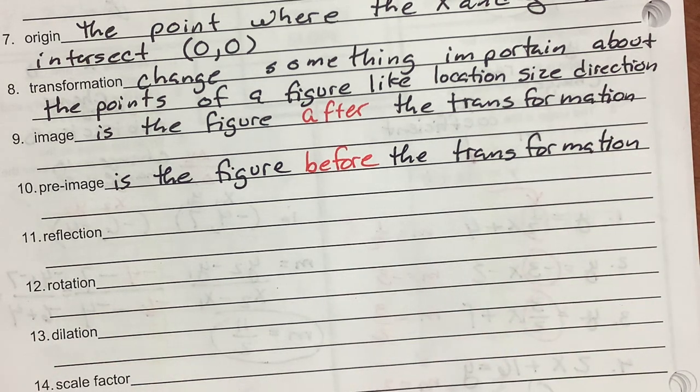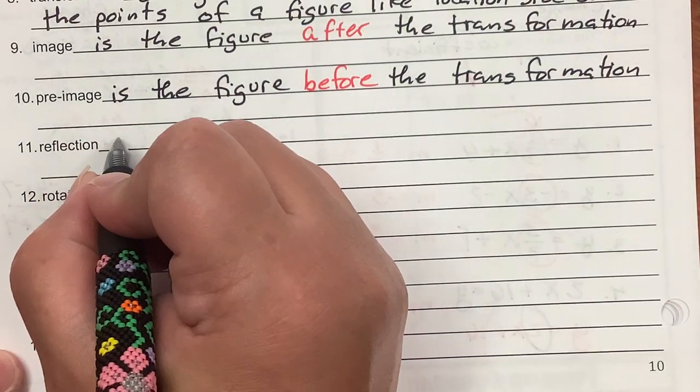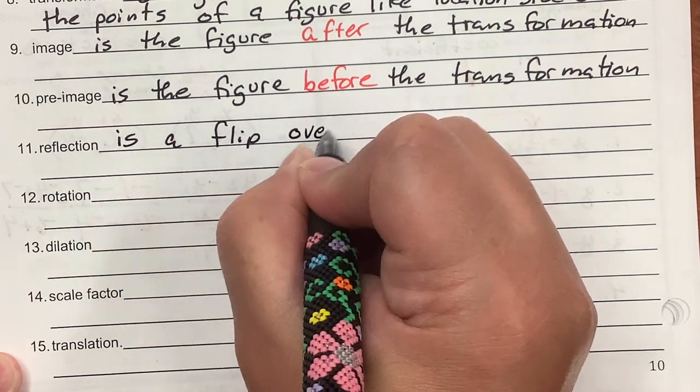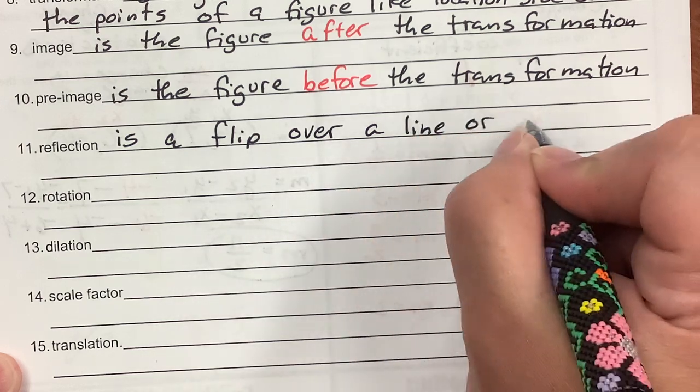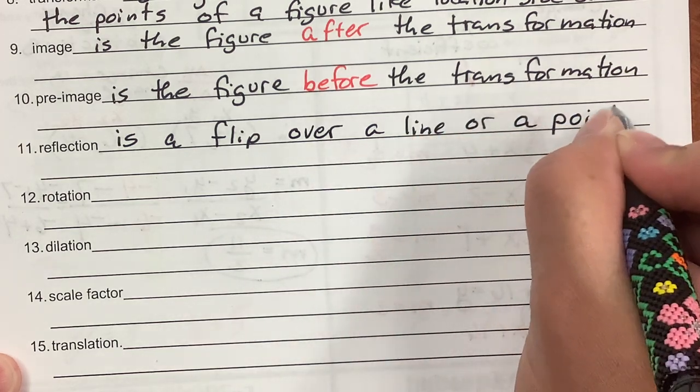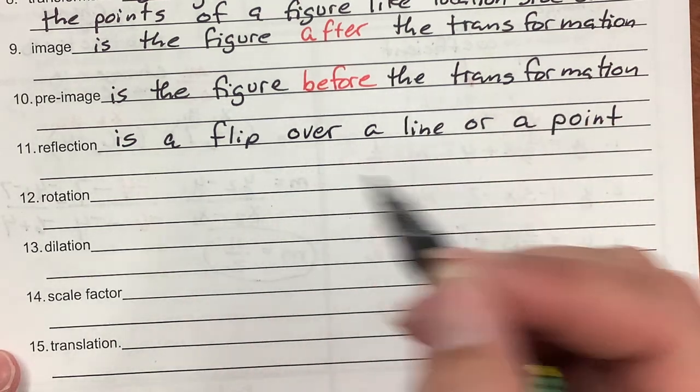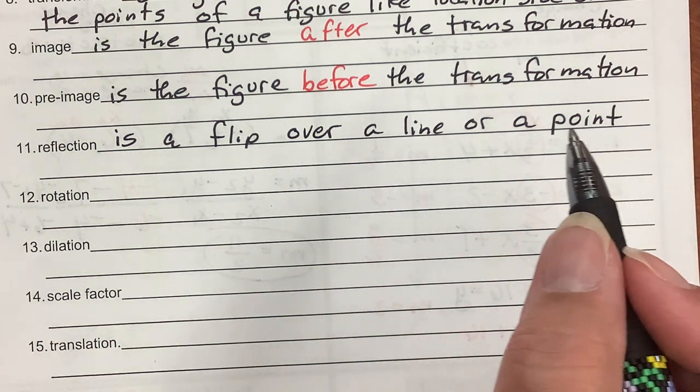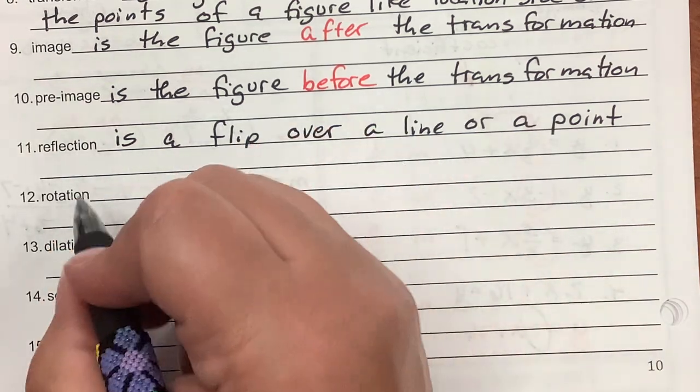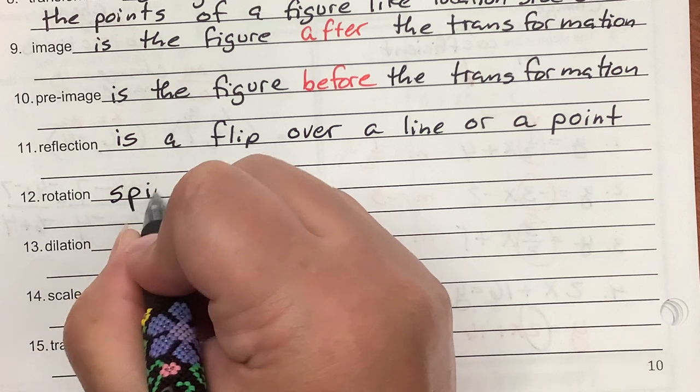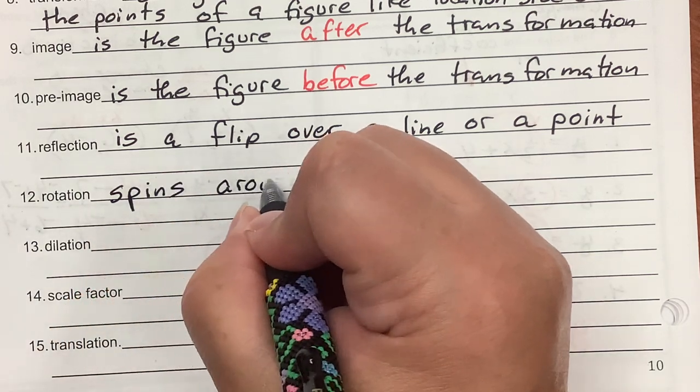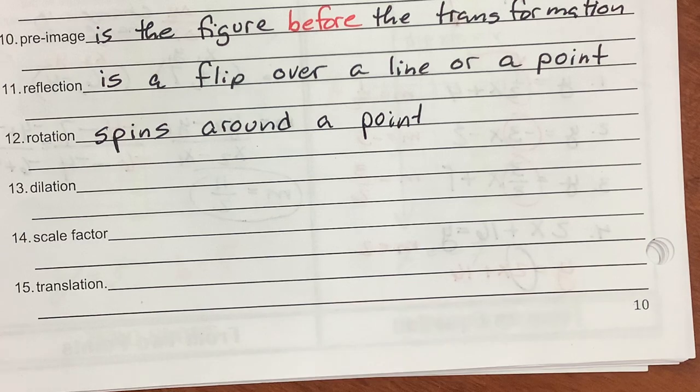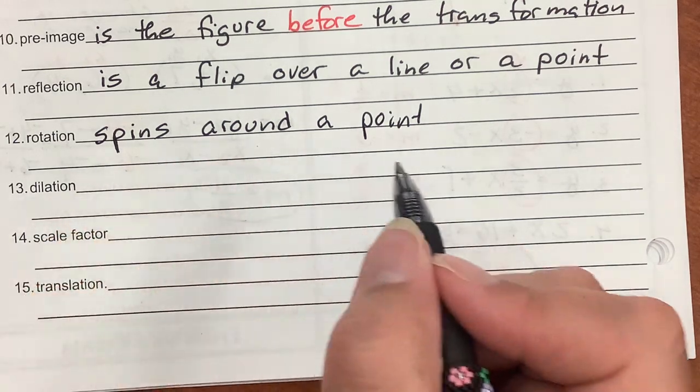A reflection flips over a line or a point. Usually you're flipping over one of the axes, but it doesn't have to be. A rotation is to spin around a point.